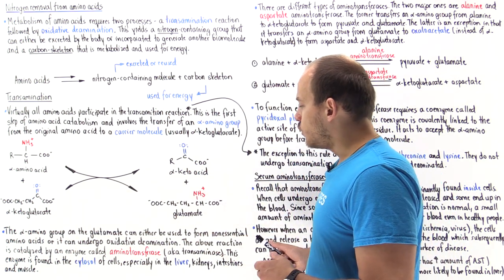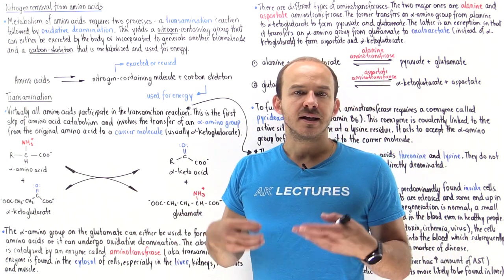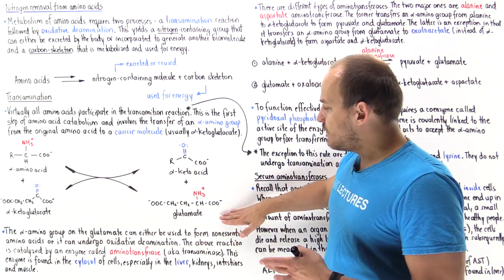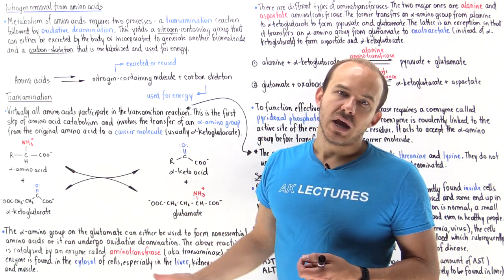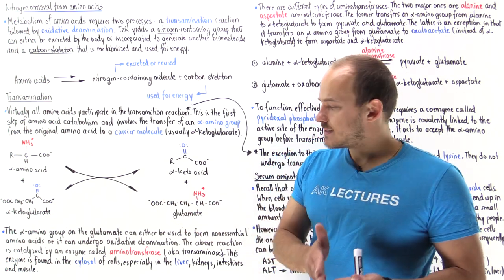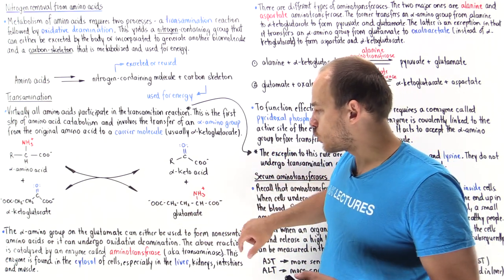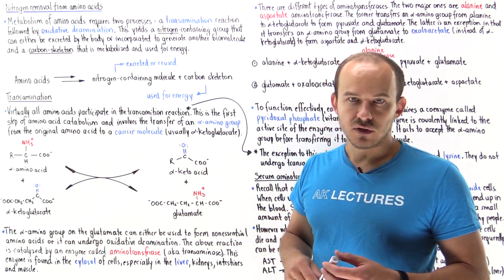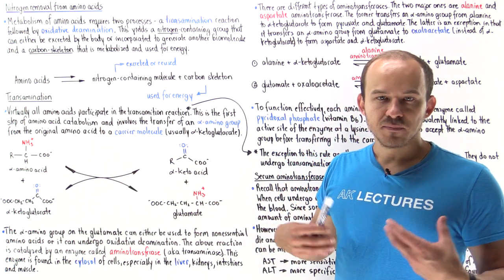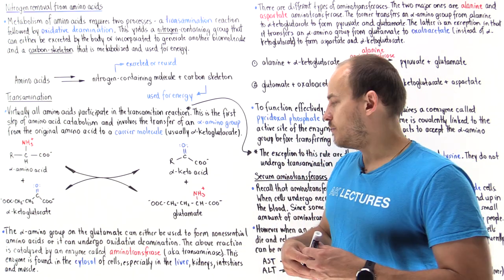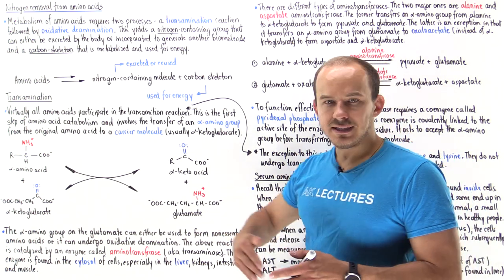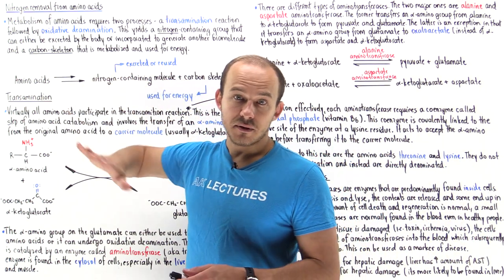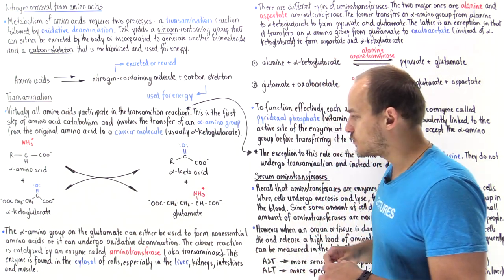When we form glutamate, what happens next depends on the needs of the particular cell. If we need to form non-essential amino acids in that cell, then this red group can be used by the glutamate to help form that non-essential amino acid. If we don't need any amino acids, then the glutamate can undergo the oxidative deamination step, which we'll talk about in the next lecture.